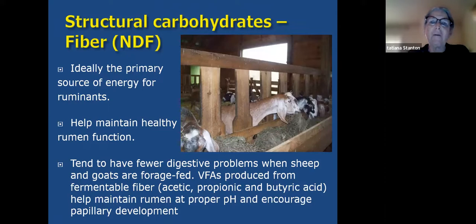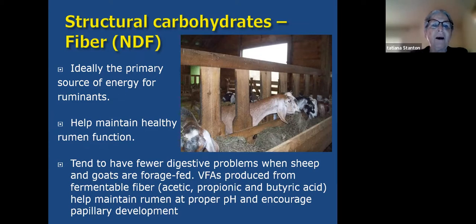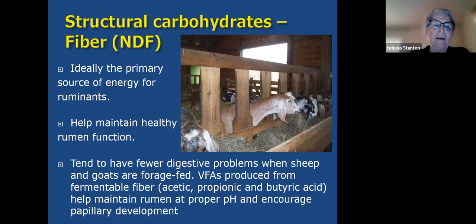Your structural carbohydrates — your fiber in a ruminant animal, unlike in a human — are the primary source of energy. Your fiber helps maintain healthy rumen function, and you tend to have fewer digestive problems when sheep and goats are forage-fed.